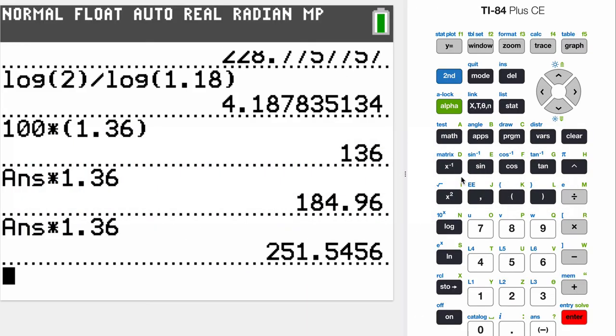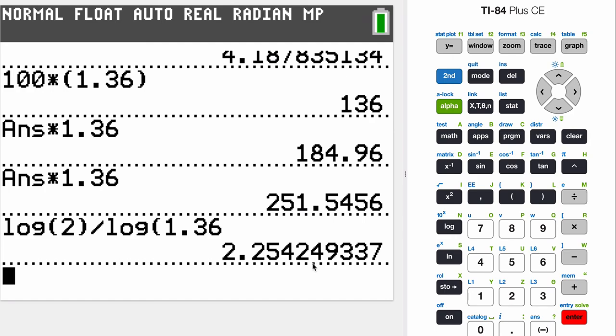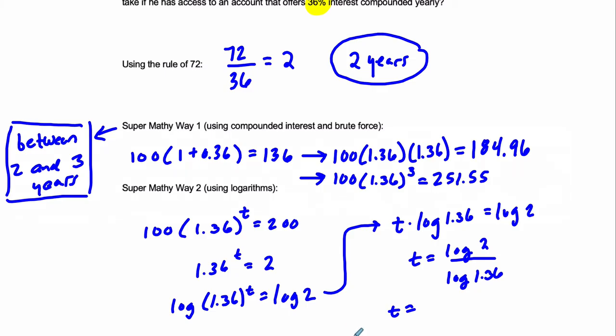Let's get that. The log of 2 divided by the log of 1.36 is 2.25 years. So 2 and a quarter of a year, which would be about 2 years and 3 months, so 2.25 years. And you can see that these numbers are changing. This is the most precise result, which is remarkably close still to the rule of 72.